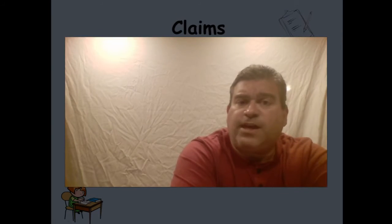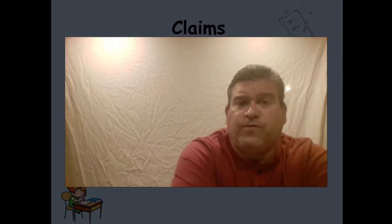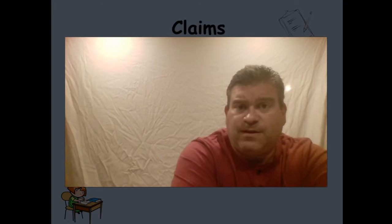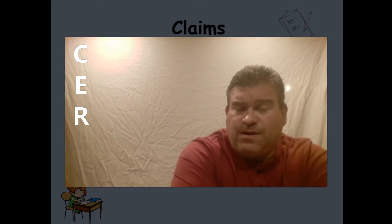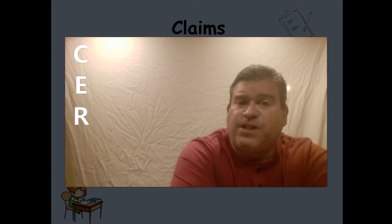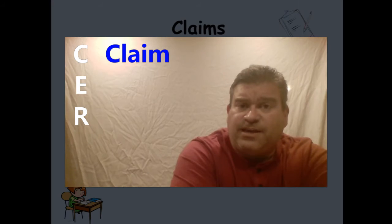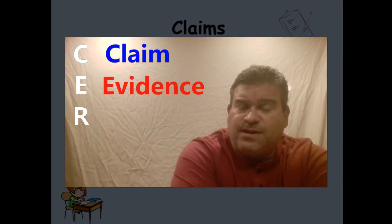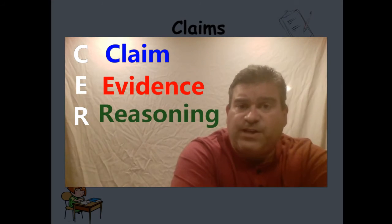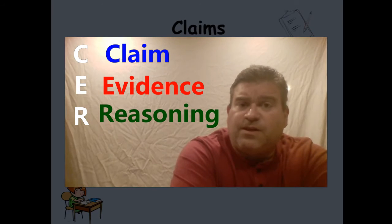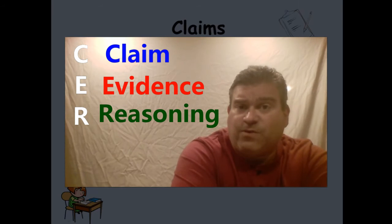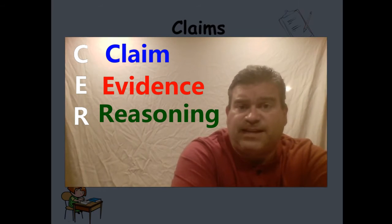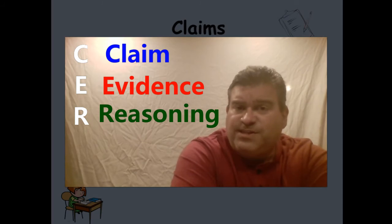Today we're going to be looking at how you explain what you've learned from an experiment. The method of doing this is what's known as CER. The C stands for Claim, the E stands for Evidence, and the R stands for Reasoning. This is a method which will help you explain how you know something and why you know something, especially when we're talking about a scientific experiment. This is how you're going to be writing your conclusions for many of your experiments.